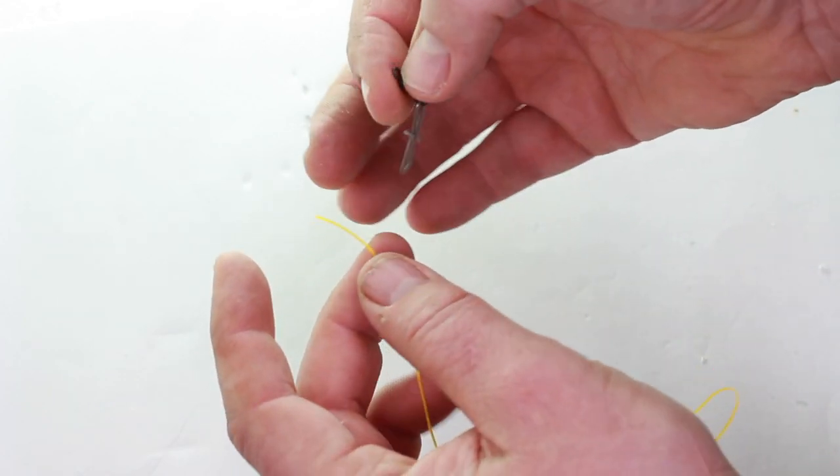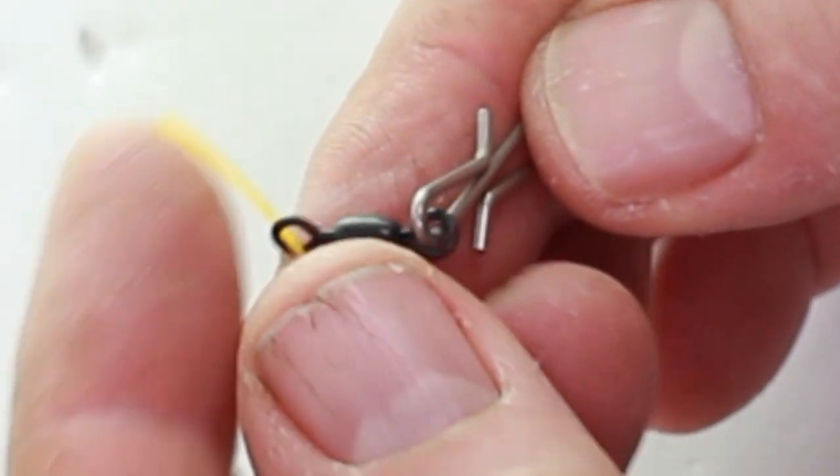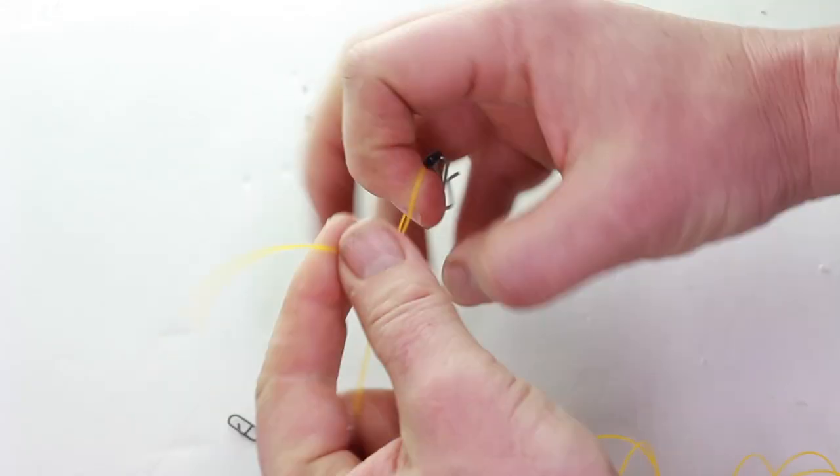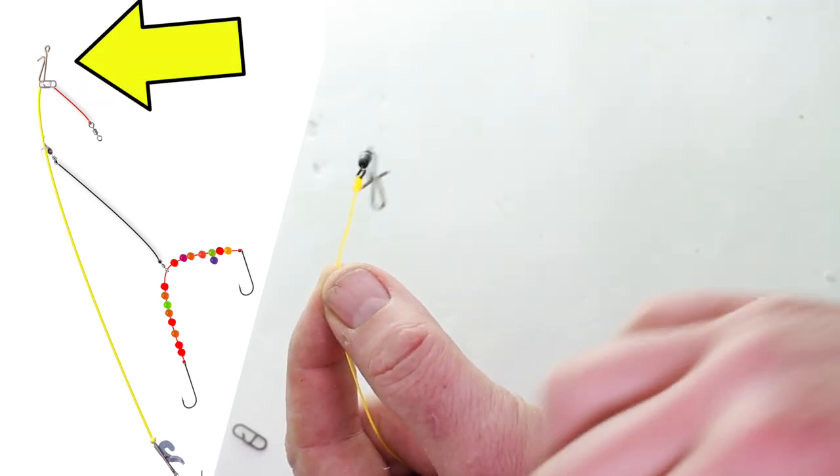And then to the other end you're going to tie on that clip that's going to go onto the main line. I use these little quick release ones, but however you're going to attach your rig to the main line. So that's right at the top of the rig.